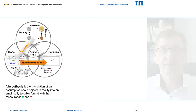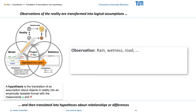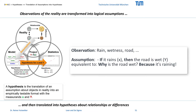Causality explains life and makes it predictable. We observe events in reality, and then we generalize our findings from individual cases to assumptions about causality. For example, in the statement: if it rains, then the road is wet. The inversion of this if-then statement leads to the why-because statement: why is the road wet? Because it's raining. This is the core of the root cause analysis that we will apply at the end of the analysis phase.